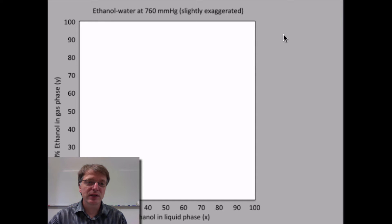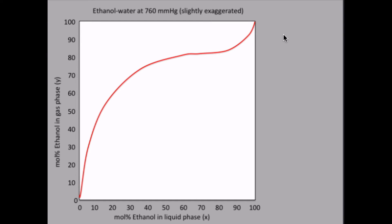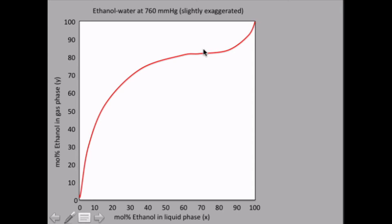To our aid we will have a slightly exaggerated system curve for ethanol-water, exaggerated to make it easier to follow. So this is the system curve: we have the liquid composition on the x-axis and the gas composition on the y-axis, and this red here is the system curve, and we draw the diagonal.